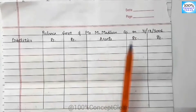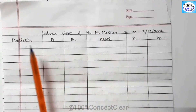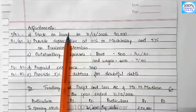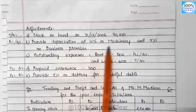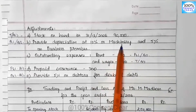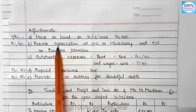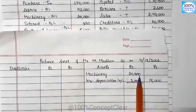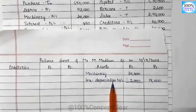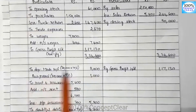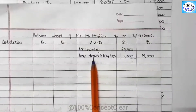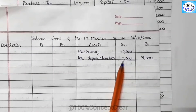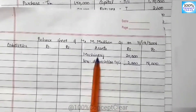First we have the adjustment for machinery. Machinery original value is $20,000, with 10% depreciation. So 10% depreciation on $20,000 equals $2,000. Depreciation goes to P&L account. So machinery $20,000 minus depreciation $2,000 equals $18,000 — that is the net machinery value in the Balance Sheet.